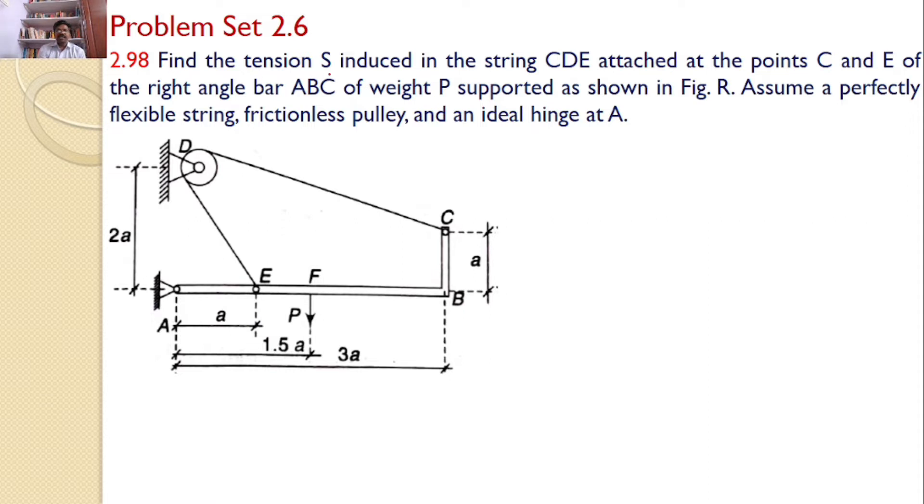Find the tension S induced in the string CDE attached to the points C and E of the right angled bar ABC of weight P supported as shown in the figure. Assume perfectly flexible string, frictionless pulley, and an ideal hinge at A.